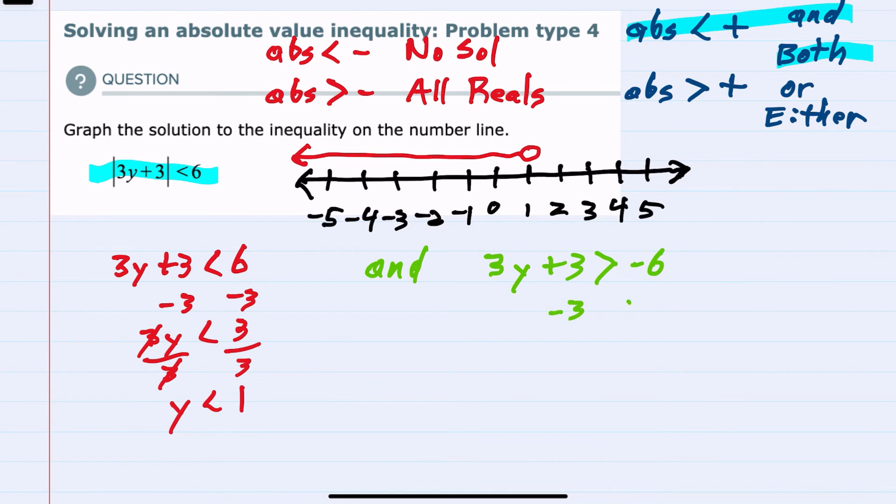I would subtract the 3 over to have 3y is greater than negative 9. And then dividing by 3, we have y is greater than negative 3. So here, that would be everything to the right of negative 3. And we said that we're going to need both of these to be true. So that means we're looking for where these two lines overlap.